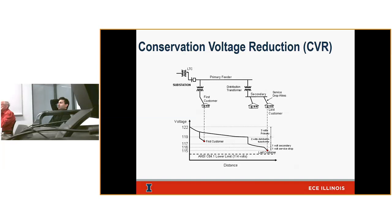Remember, transformers also have a voltage drop across them. The rule of thumb for design engineers is a 2-volt drop across the distribution delivery transformer. Then you have a secondary line and a service drop. The secondary runs single-phase laterals to homes, and the service wire from the distribution transformer to your house also has a voltage drop. So: 2 volts across the transformer, 1 volt for the secondary, 1 volt for the service — that's about a 4-volt drop near the customer.